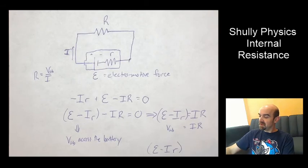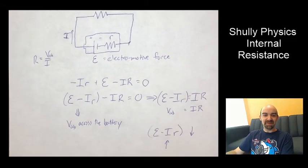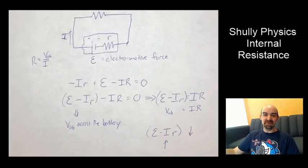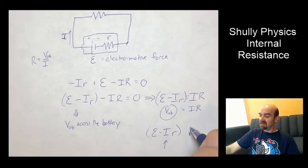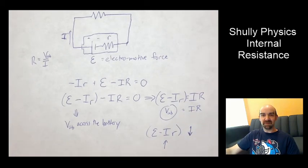If I increases, then this whole term is going to decrease. So if I increases, that whole term decreases. That's where we're getting the VAB giving us a decrease.